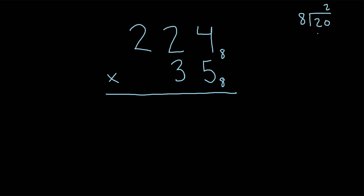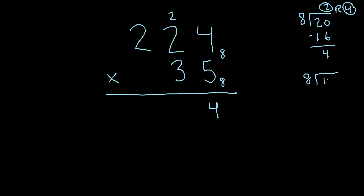That would be 2. Eight times 2 is 16, so 20 minus 16 is 4. The remainder 4 is written here, and the 2 goes to the top of the next column. Now we have 5 times 2 plus 2. Five times 2 is 10, plus 2 is 12. How many eights go into 12? Just 1. One times 8 is 8, so 12 minus 8 is 4. The remainder 4 is written here, and the 1 carries to the next column.